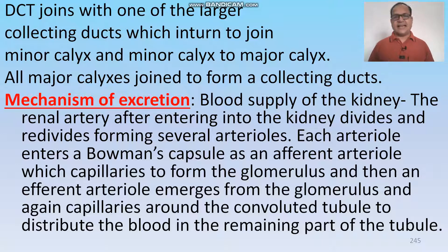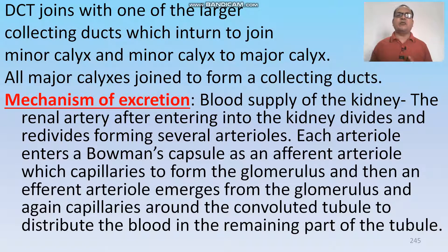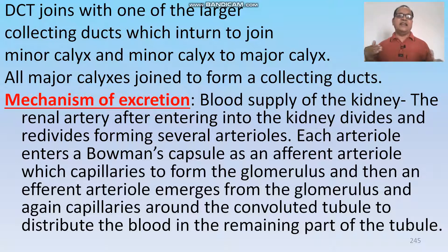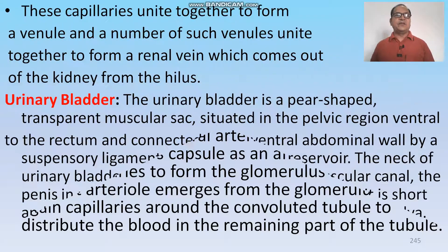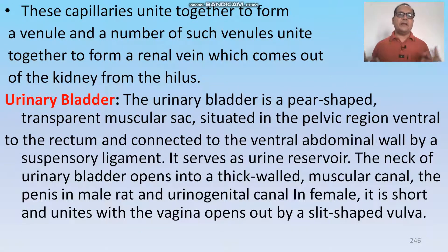The mechanism of excretion and blood supply of the kidney: the renal artery after entering into the kidney divides and redivides forming several arterioles. Each arteriole enters a Bowman capsule as an afferent arteriole, which forms capillaries to form a glomerulus. An efferent arteriole then emerges from the glomerulus and again forms capillaries around the convoluted tubule to distribute blood into the remaining part of the tubule. These capillaries unite to form venules, and a number of venules unite to form the renal vein which exits the kidney.